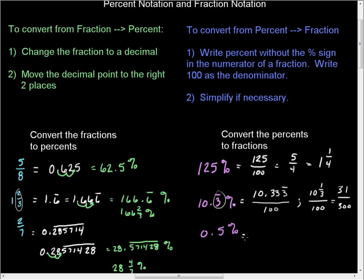For the final example, 0.5% is 0.5 per 100. Multiplying both top and bottom by 2 gives you 1 per 200. That second step — simplify if necessary — is very dependent on what your instructor is looking for. Most often, simply the conversion itself is plenty.